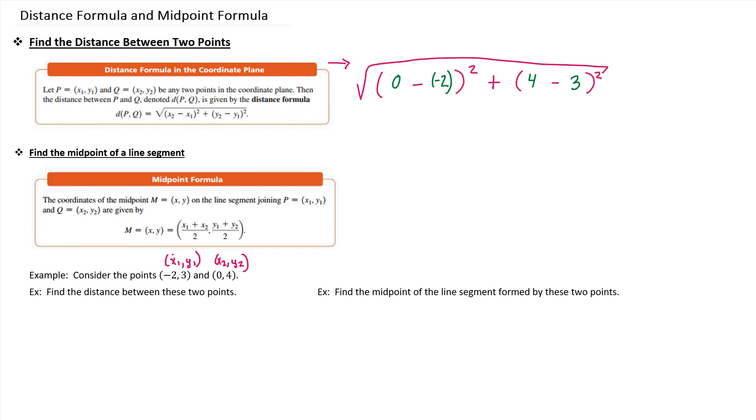So then you have the square root of, go ahead and simplify your quantities. 0 minus a negative 2 is 0 plus 2, which is just 2. So this is 2² plus (4 - 3)², which is 2² plus 1².